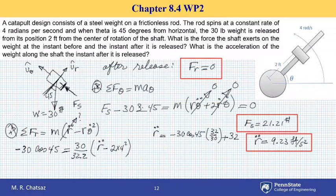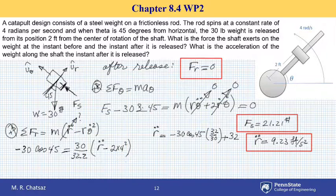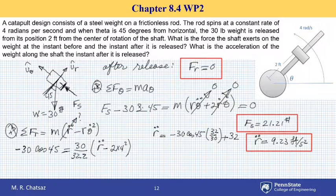This acceleration r-double-dot in the radial direction should not be mistaken for a_r. The quantity a_r is the total acceleration in the radial direction, whereas r-double-dot is only part of it — it can be interpreted as the relative acceleration of the steel weight with respect to the rod, not the full a_r. Thanks for watching.